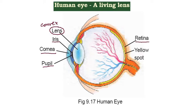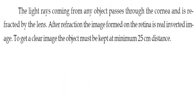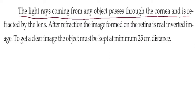The Retina — when you see an image, it is formed on the retina. If you see an image on the yellow strip, then you will see the image on the retina. Now, the light rays coming from any object pass through the Cornea and are refracted by the Lens.